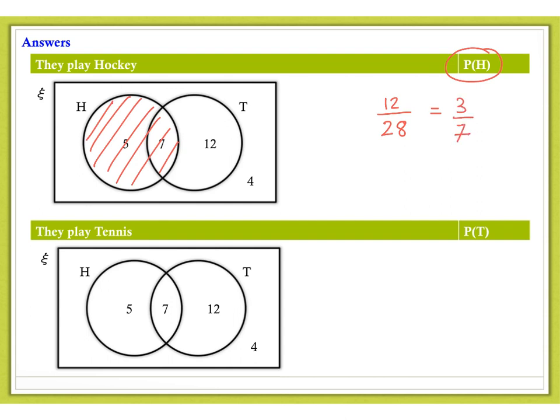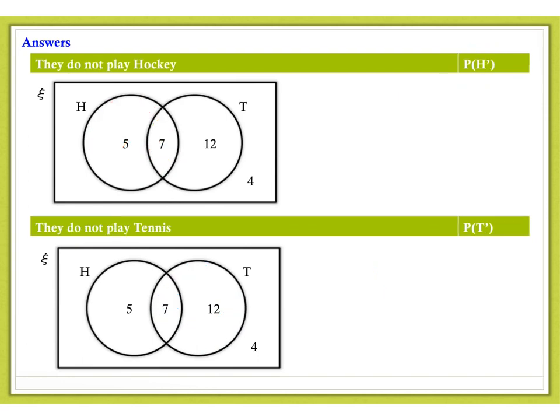What is the probability that they play tennis? Well, that refers to the 19 people out of 28, which does not simplify. The probability that they do not play hockey. So, that refers to these people and these four people here. So, that's 16 out of 28, which simplifies down to 4 sevenths. Notice, that's one takeaway, the 3 sevenths, which, of course, was the probability that somebody did play hockey.